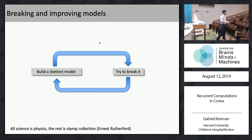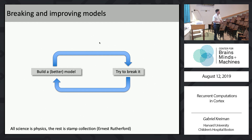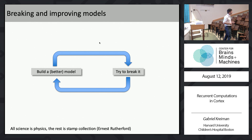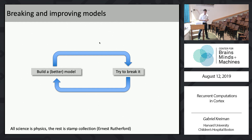The way to approach this — I'm a physicist by training — I like to think about building models and breaking models. We want to build computational models related to biological hardware, and then break those models in order to build better models. This is the trick that scientists invented — perhaps Galileo invented this — the trick that allows us to have a job forever. We can build models, break them, and continue this loop and have fun for a very long time.